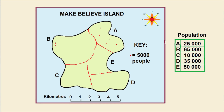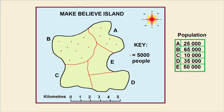Region B has the most people with 65,000 so it is going to be 13 dots. But we don't bunch them all in closely — because we are showing distribution, we're going to spread them out evenly: 1, 2, 3, 4, 5, 6, 7, 8, 9, 10, 11, 12, and 13.